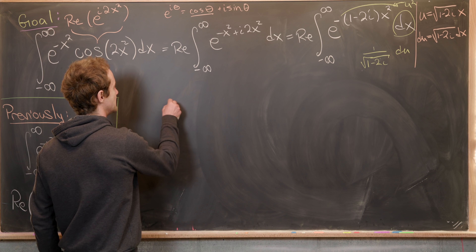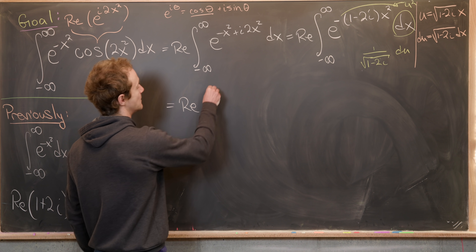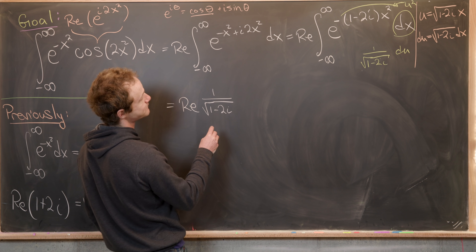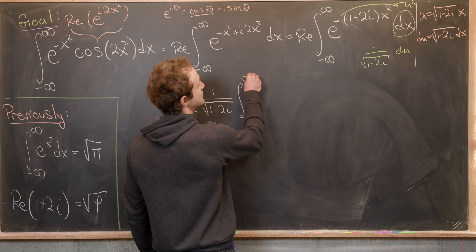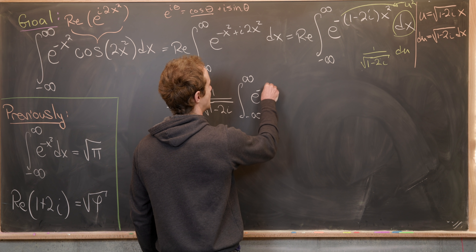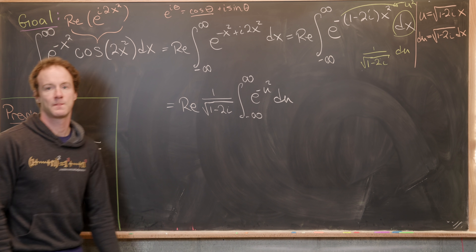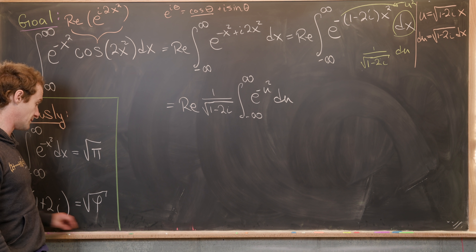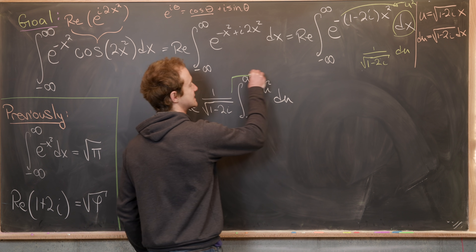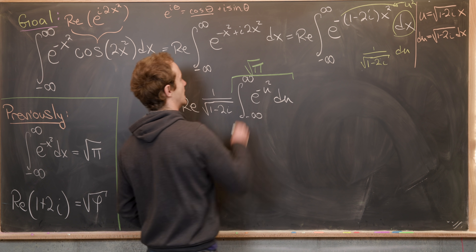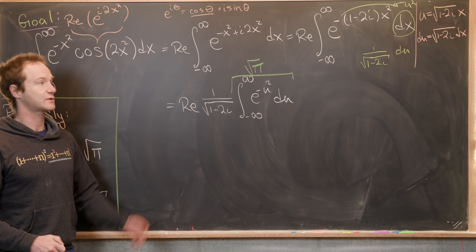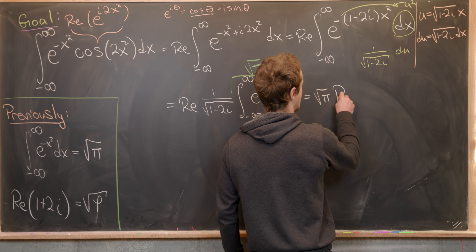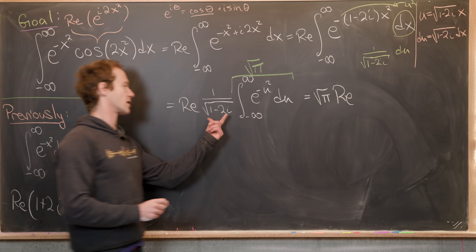So that leaves us with the real part of 1 over the square root of 1 minus 2i, times the integral from minus infinity to infinity of e to the minus u squared du. But that integral is just the Gaussian integral, so we can replace it with the square root of pi. Since the square root of pi is a real number, we can factor it out, giving us the square root of pi times the real part of 1 over the square root of 1 minus 2i.